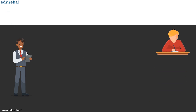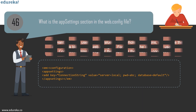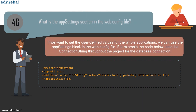Question 46: what is the app settings section in the web.config file? If we want to set user-defined values for the whole application, we use the appSettings block in web.config. For example, you can define a connection string throughout the project for database connection: open configuration, go to appSettings, add a key 'connectionString', give it the server as local, mention the password and database as default, then close appSettings. This is how you can use the connection string throughout the project.